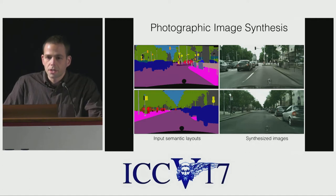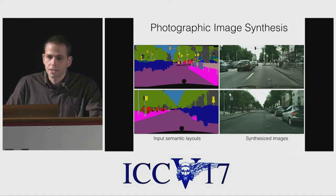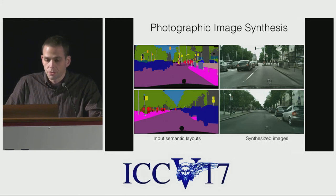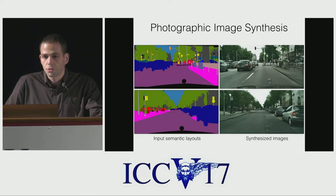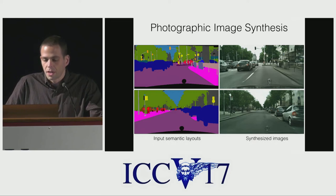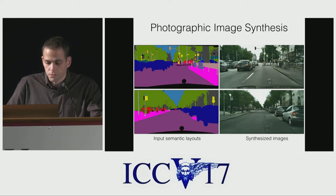What you see on the right is the output of our approach. We synthesize these with a deep network, a single feed-forward pass in a convolutional network. Our goal is that the output images look like photographs — ideally indistinguishable from photographs. Our results are not yet indistinguishable from photographs, but they're quite good.